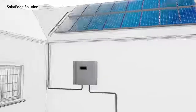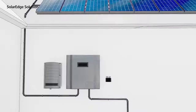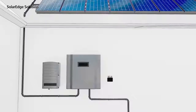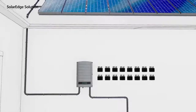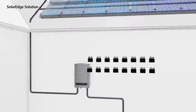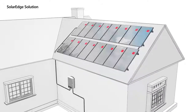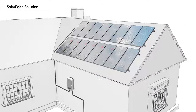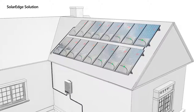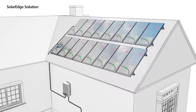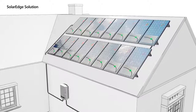Our solution splits the traditional inverter functionality into two products: the power optimizer and a simplified inverter. The power optimizers are located on each panel, turning the panels into intelligent panels. These power optimizers provide panel-level tracking and real-time adjustments of current and voltage to the optimal working point of each individual panel.